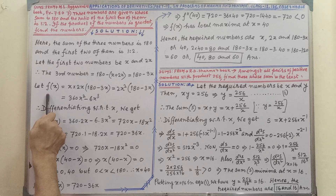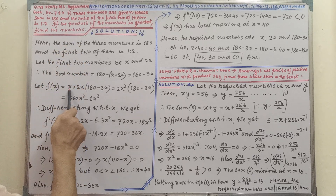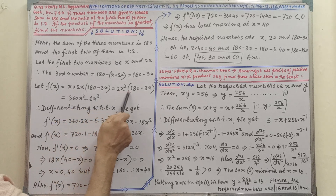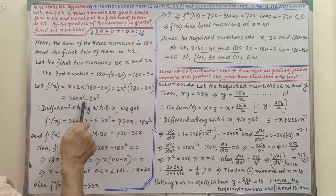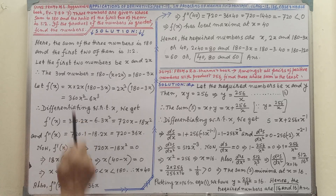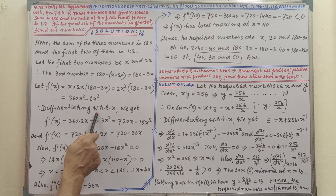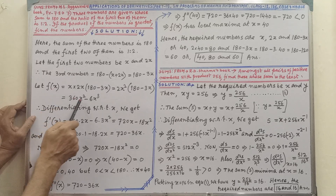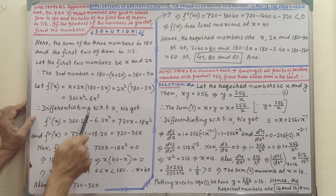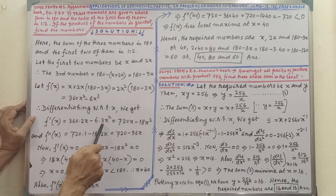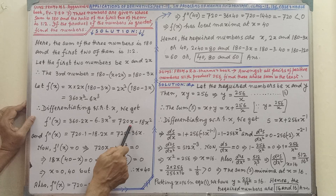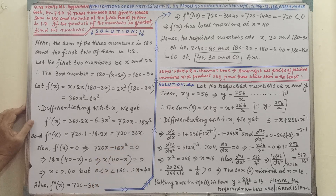Let f(x) be the product of the first, second, and third numbers. By multiplying and simplifying, we are getting f(x) equal to 360x squared minus 6x cubed. Therefore, differentiating with respect to x, we get f'(x). Differentiation of x squared is 2x, and differentiation of x cubed is 3x squared. By simplifying, we are getting f'(x) equal to 720x minus 18x squared.